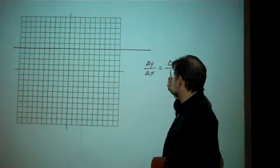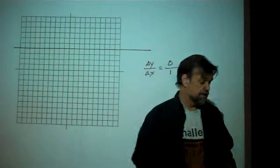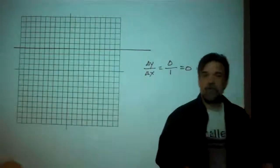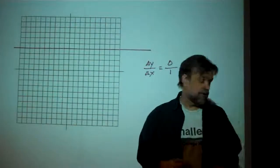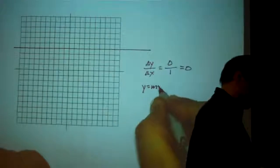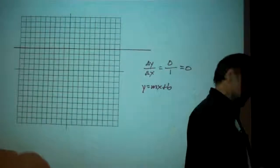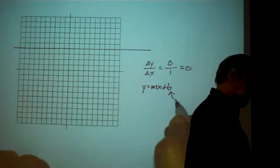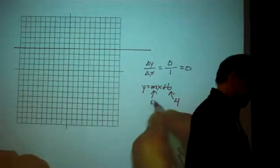Well, 0 divided by 1, I think I know what that is. And that's 0. So how would I write the equation of this line? Well, we have y = mx + b. I already know what my y-intercept is—it was the point (0,4), so b is 4. And I know what the slope is. The slope is 0.